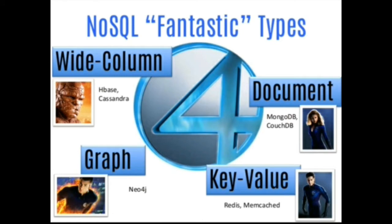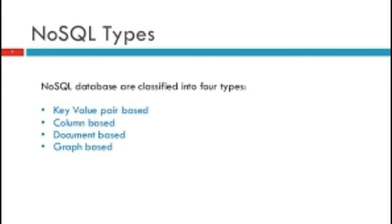The next topic is the types of NoSQL. It is widely classified into four categories: key-value pair, document-based, graph-based, and column-based. Let's see a brief explanation of these types of NoSQL.